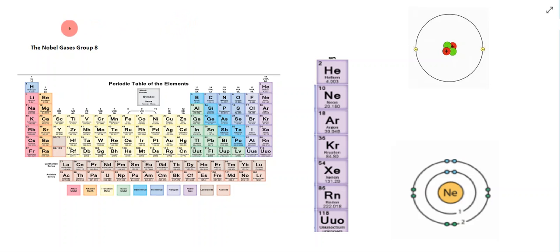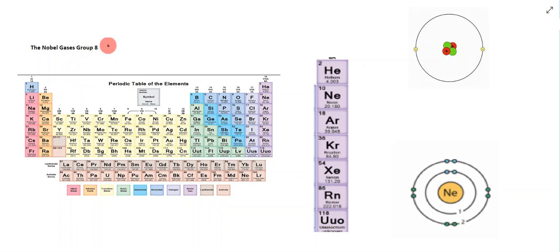The final group we're going to look at are the noble gases, and these are Group 8. The noble gases are situated here on the periodic table. Because they're Group 8, remember the number represents the number of electrons that are in the outside shell of the atoms of these elements within this group.